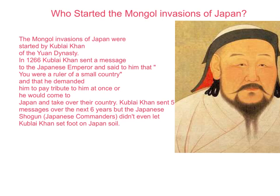In 1266, Kublai Khan sent a message to the Japanese emperor, telling him that he was the ruler of a small country and that he demanded him to pay tribute at once, or he would come to Japan and take over their country. Kublai Khan sent five messages over the next six years, but the Japanese shogun and commanders didn't even let Kublai Khan set foot on Japanese soil.